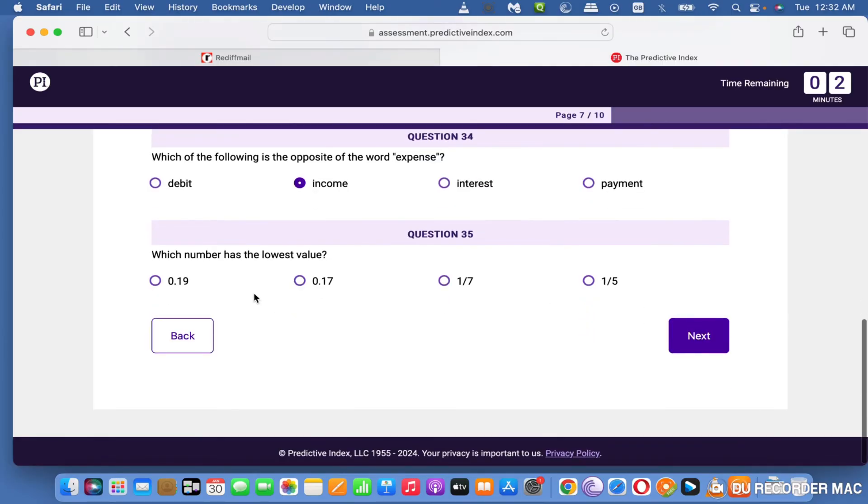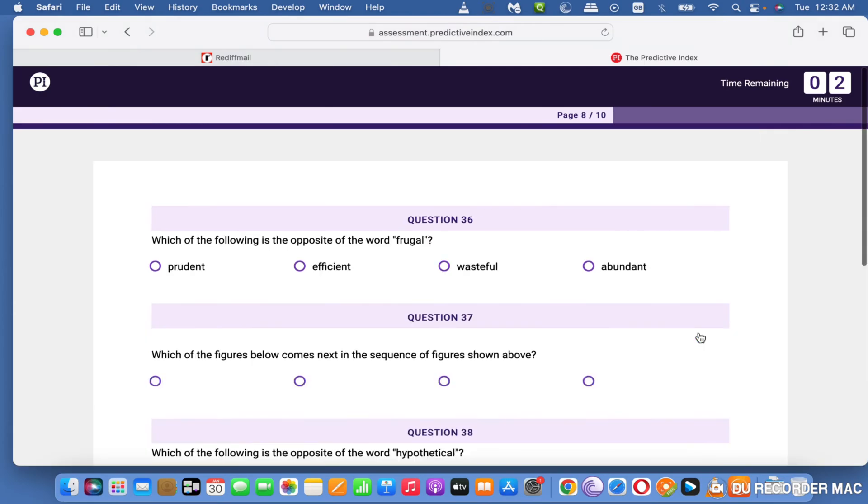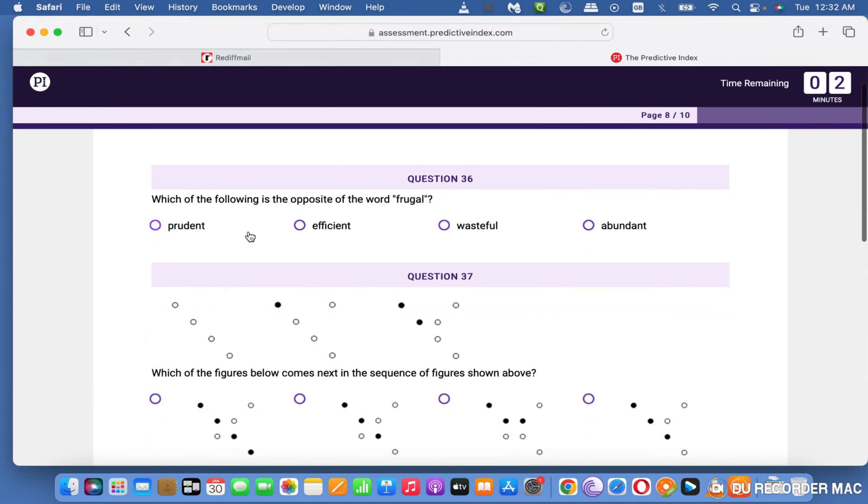This question was about income being the opposite of expense. You see, the lowest value question type appears maybe more than 5 or 6 times. If you already know this, you can practice on that and it will be easier for you. That's like 5, 6, or 7 marks, whatever number appears.